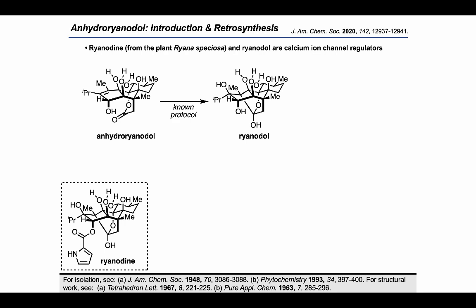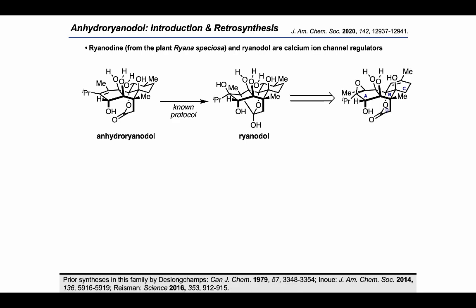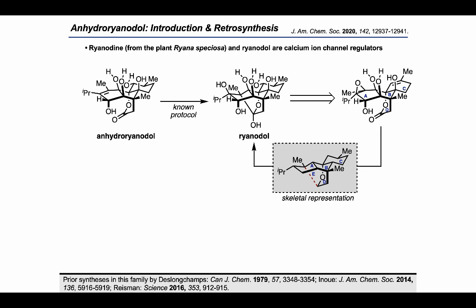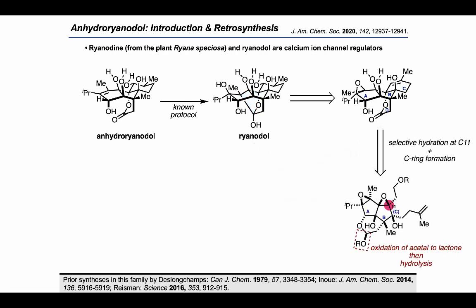The authors started their retrosynthetic analysis by taking advantage of a disconnection that de Longchamp and Reisman had previously demonstrated, the feasibility of which would form the E ring in the synthetic direction. They imagined that this ring system could emerge from a precursor used to perform an oxidation of the acetal to the lactone, followed by hydrolysis of the lactone and utilization of the resulting carboxylate nucleophile to attack carbon 11 and open the epoxide. A ring-closing metathesis might also be employed to close the C ring with the aid of some functional group interconversions.